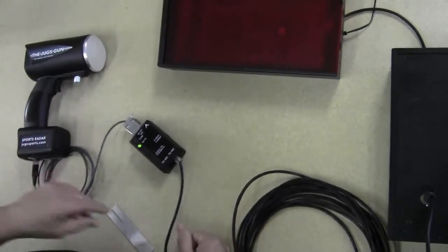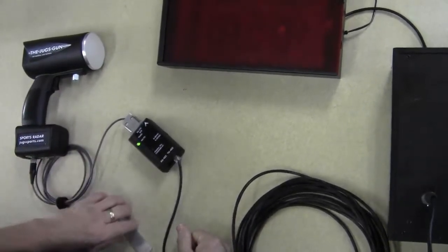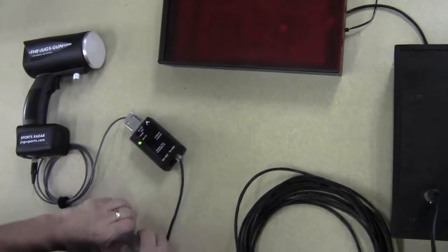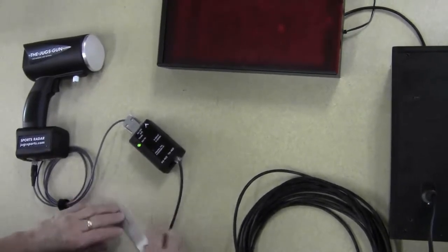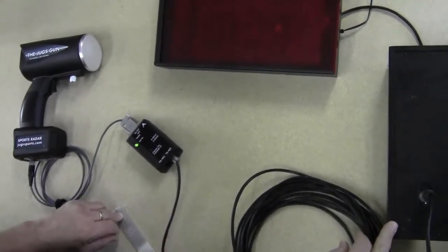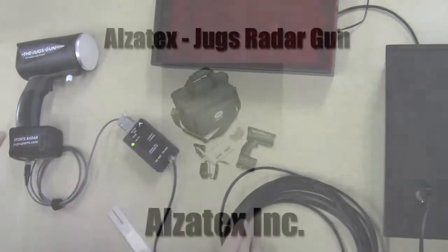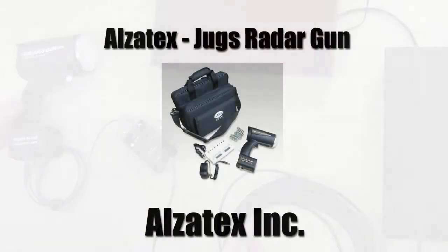So if they aren't communicating to each other, but this light does blink, then it could be a baud rate issue. You'll have to contact the OAS to ask them what baud rate their display is at, and we know the JUGS radar gun is already at 1200.